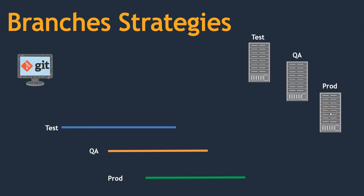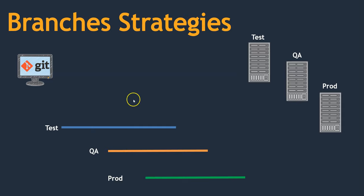Our production system is going to be used by end users or our clients. So before deploying any code onto production, we need to make sure that the code is working. For that, we are going to take advantage of test and QA branches.